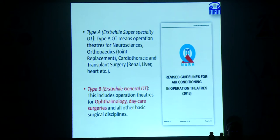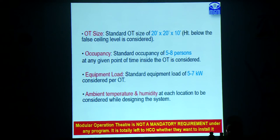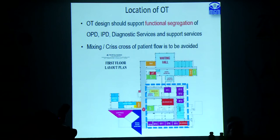There are revised guidelines from NABH, mostly applicable when installing air conditioning systems, edited in 2018 as the latest version. They give standards such as OT size should be around 20x20 feet, with specified height. Standard occupancy in the theater at any point of time should be 5 to 8 persons, with an equipment load of 5 to 7 kilowatt per OT. Ambient temperature and humidity at each location are to be considered. Modular theaters have become popular with many vendors, but they are not a mandatory requirement and involve significant cost, so a standard OT is also acceptable.